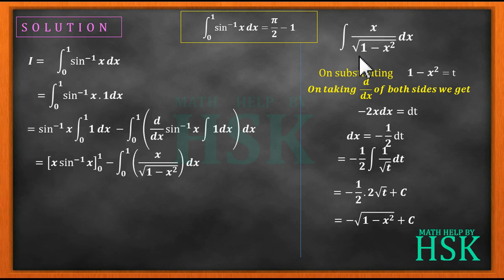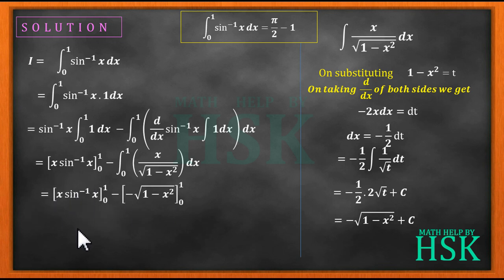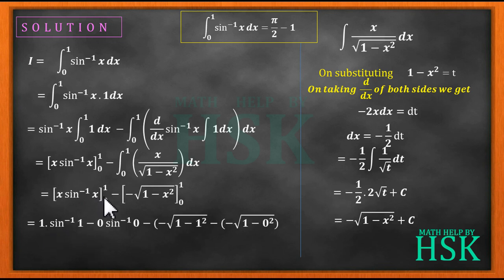With the indefinite integral solved, I place the limits. The value of this definite integral is minus square root of 1 minus x square from limit 0 to 1. So the full expression becomes: 1 into sine inverse of 1 minus 0 into sine inverse of 0, minus bracket minus square root of 1 minus 1 square, minus minus square root of 1 minus 0 square.